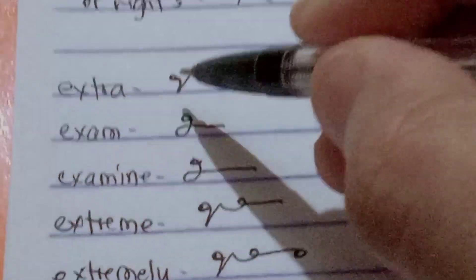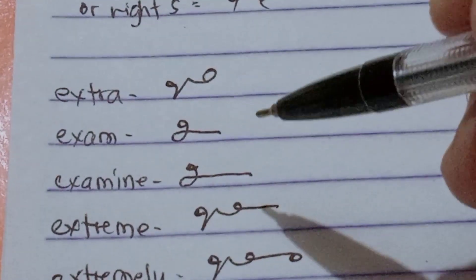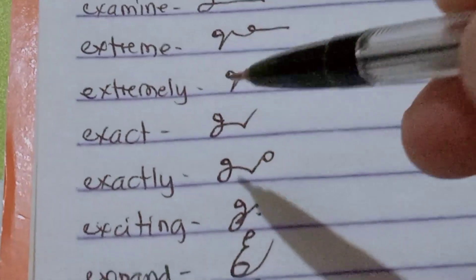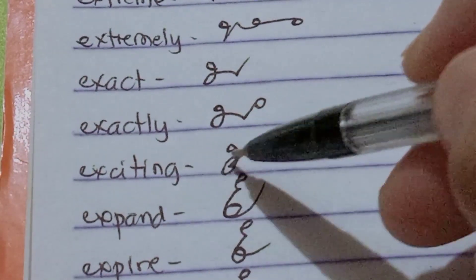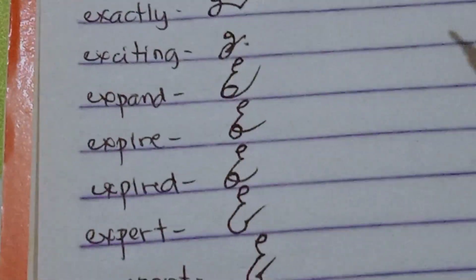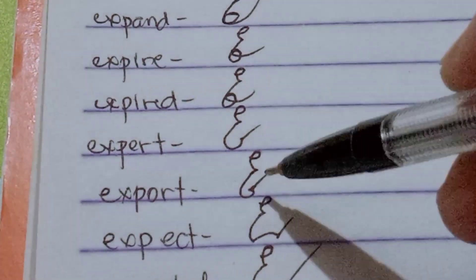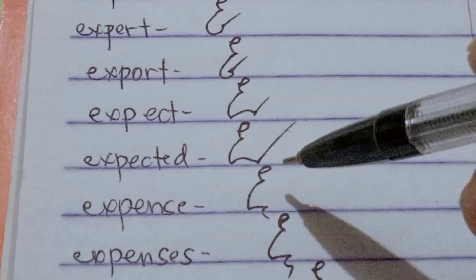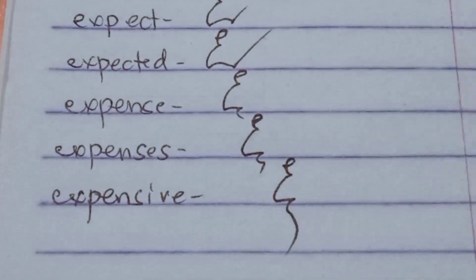Expected: E-S-P-K-T-D. Expense: E-S-P-N-S. Expenses: E-S-P-N-S-S. And expensive: E-S-P-N-S-V. Let's spell out and read all together: extra, exam, examine, extreme, extremely, exact, exactly, exciting, expand, expire, expired, expert, export, expect, expected, expense, expenses, and expensive.